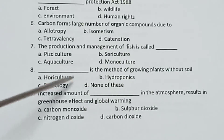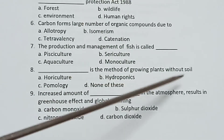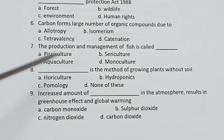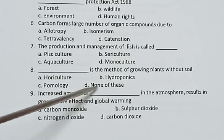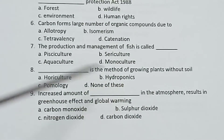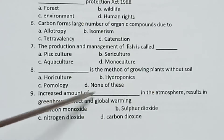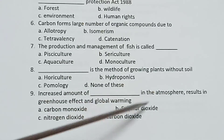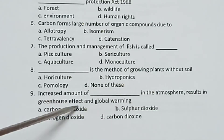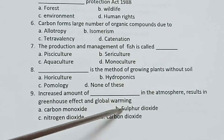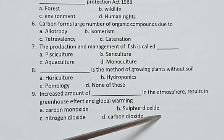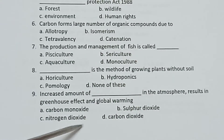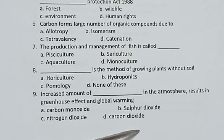Eighth one: Dash is the method of growing plants without soil. Options: Horticulture, Hydroponics, Pomology, None of these. Ninth one: Increased amount of dash in the atmosphere results in greenhouse effect and global warming. Options: Carbon Monoxide, Sulphur Dioxide, Nitrogen Dioxide, Carbon Dioxide.